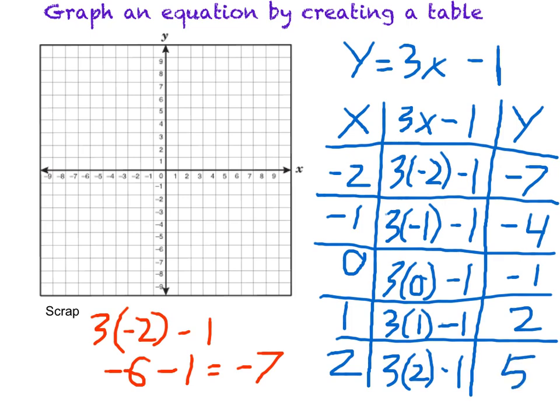Now I have a y value to go with each and every x value. When x is negative 2, y is negative 7. So I can graph that on my coordinate plane at the point negative 2, negative 7.